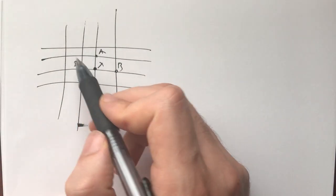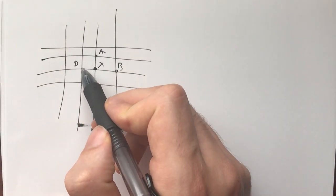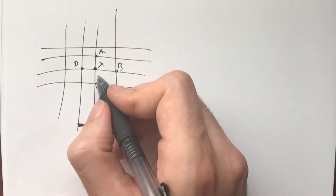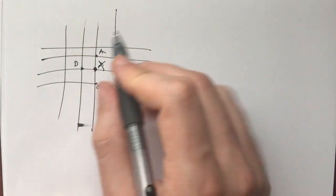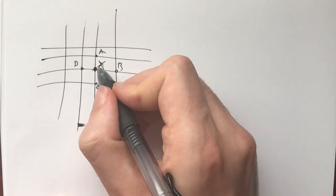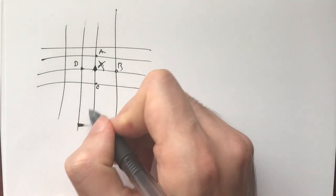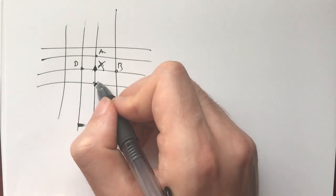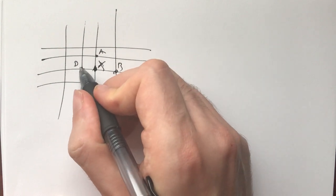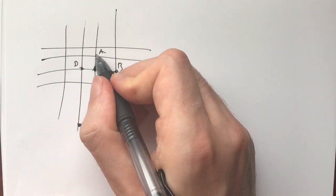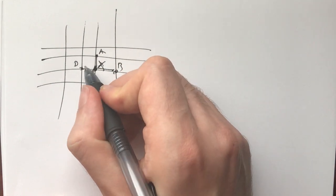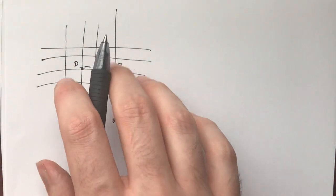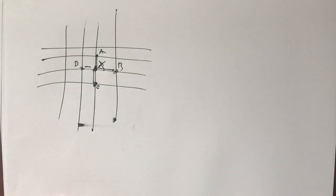Each lattice point in the plane is labeled by a positive integer. We have that every lattice point is equal to the arithmetic mean of all of its neighbors: up, right, down, and left. And we must prove that all of these actually have the same number label.